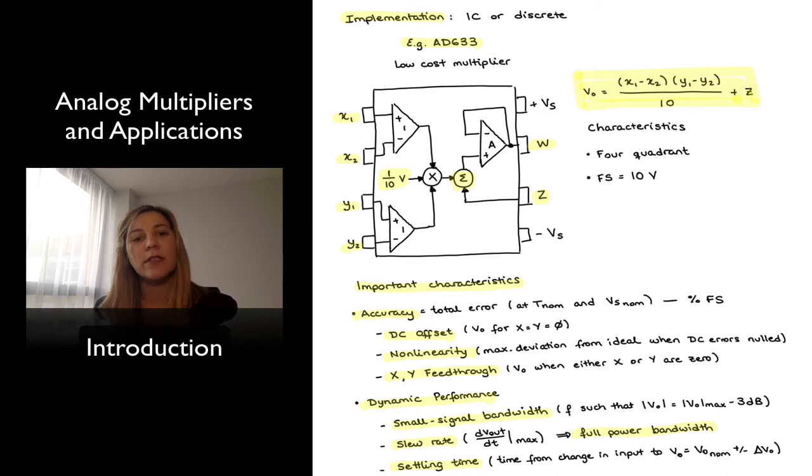So these are some of the important characteristics. You will notice that some of them are very similar to what you will encounter in an op-amp datasheet. However, analog multipliers are more complex circuits than op-amps, and because of that, they're also much more expensive circuits than op-amps.